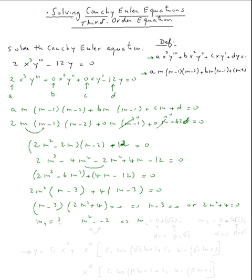So m₂ will be 0 + √2i, and then m₃ is equal to 0 - √2i. Right? √2i, -√2i.